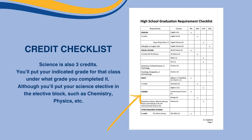For science, you'll also need three credits. You'll put your anticipated grade for that class under whatever grade level you completed it in. You'll put your science elective in the elective blocks — such as chemistry, physics, and other such things.